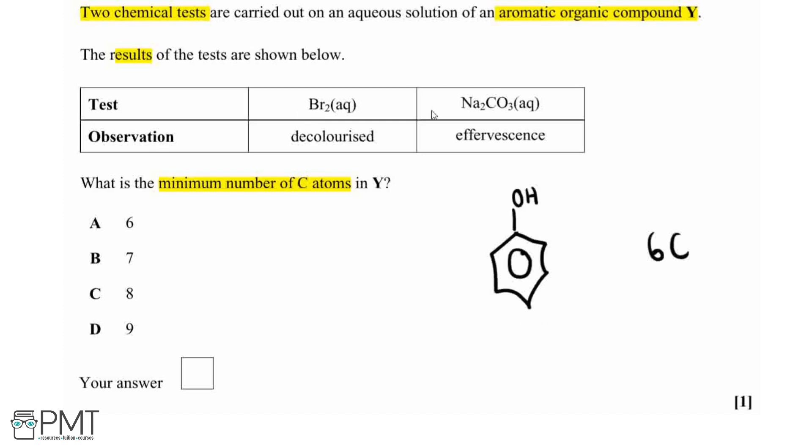So then for our second test, we've got some sodium carbonate aqueous and we've been told that we've got effervescence. For this sodium carbonate, this is a base, and for there to be effervescence, this means it's reacted with an acid of sorts. We've had an acid plus our sodium carbonate, and this will have produced a salt, water, and carbon dioxide gas, which is causing this effervescence mentioned.